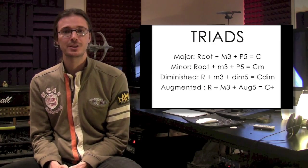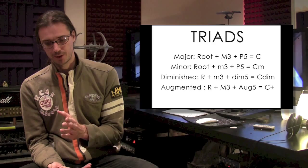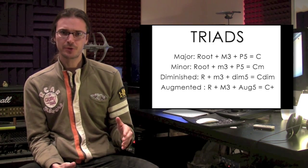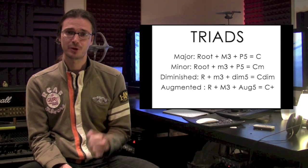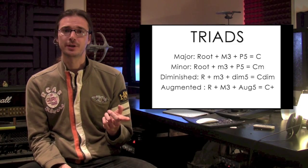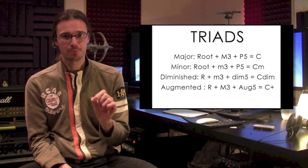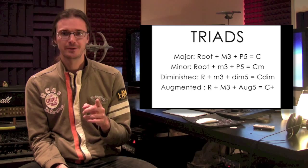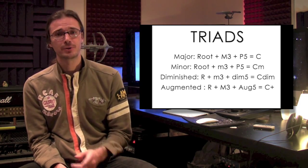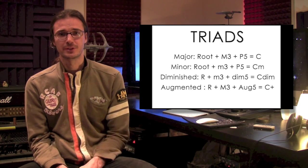The first big family is called triads, and we're going to focus on four: major, minor, diminished, and augmented. For a C major chord, you go to your table and look for root (C), major third (E), and perfect fifth (G) — so C, E, G. For minor, the formula is root, minor third, fifth — so C, E-flat, G. You just go to the right column and pick the note. You can also do this for other roots. For D minor, it would be D, F (minor third), and A (fifth).